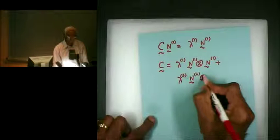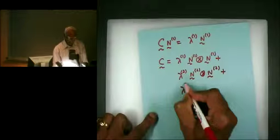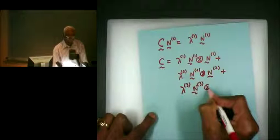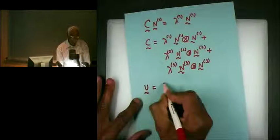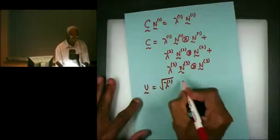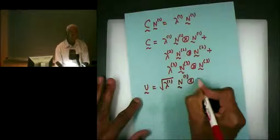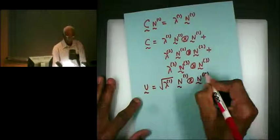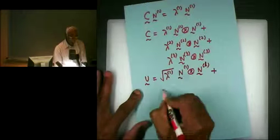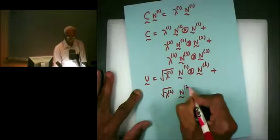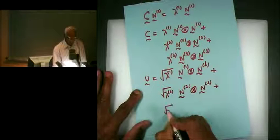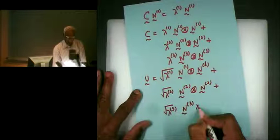...tensor product N2, plus lambda-3 times N3 tensor product N3. So no matter what software you use, for a given C it should give you the eigenvalues and the eigenvectors. Then U is square root of lambda-1 times N1 tensor product N1, plus square root of lambda-2 times N2 tensor product N2, plus square root of lambda-3 times N3 tensor product N3. That should work.